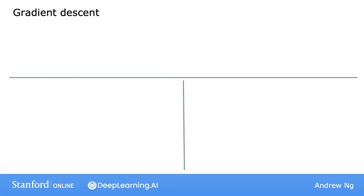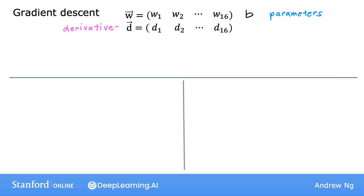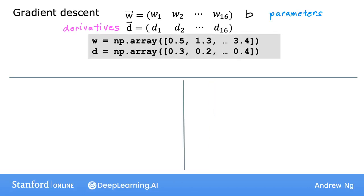Now let's take a look at a concrete example of how this helps with implementing multiple linear regression — that is, linear regression with multiple input features. Say you have a problem with 16 features and 16 parameters w1 through w16, in addition to the parameter b. You calculated 16 derivative terms for these 16 weights, and in code, maybe you stored the values of w and d in two numpy arrays, with d storing the values of the derivatives.